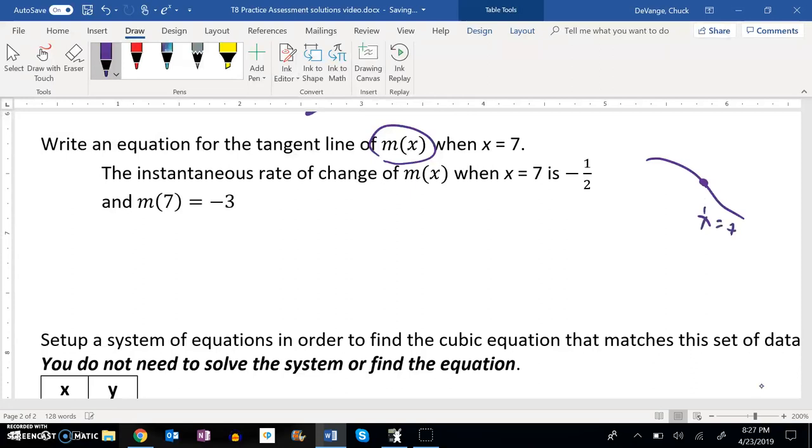But when x is 7, and it actually tells us m of 7 is negative 3, so y is negative 3, we have some tangent line there, some line that just touches it.